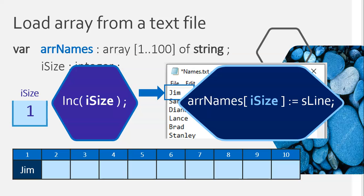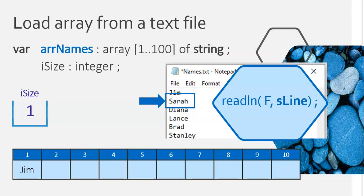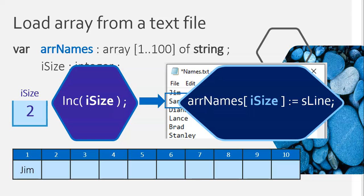The loop for our text file will go to the next value, which is Sarah. That's going to use a readline, so the value in S line will be the word Sarah. We want to put this value into our array — so what do we do first? We increase array size first. It now becomes two, so we put Sarah at position two in the array. Array names at array size, at position two, gets the value in S line, which is Sarah.